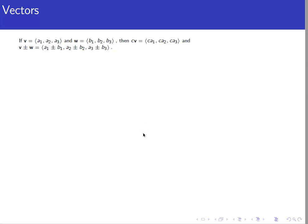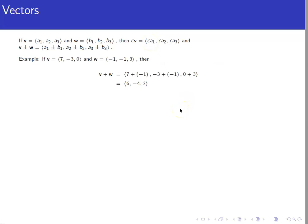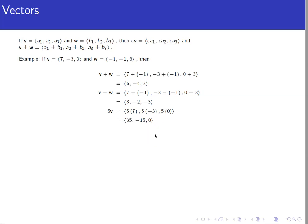We already discussed geometric addition, subtraction, and scalar multiplication. In analytic form: to multiply a scalar by a vector, multiply the scalar by each component; to add two vectors, add their corresponding components; to subtract two vectors, subtract each component. For example, if v + w gives ⟨6, −4, 3⟩, v − w gives ⟨8, −2, −3⟩, and 5v gives ⟨35, −15, 0⟩.